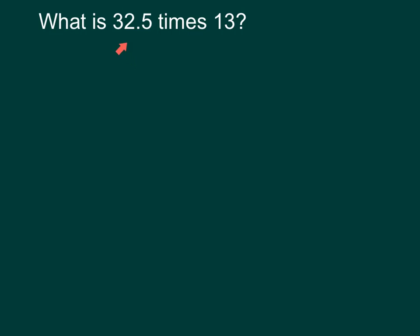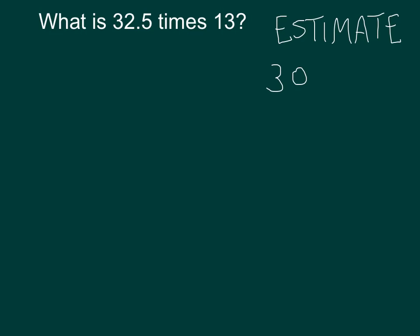For this problem, we want to take this number, 32.5, times 13. I'm going to show you one way to do this. The first thing we're going to do is an estimate. When we do our estimate, I look at my two numbers and I say, what is this close to and what is this close to? I'm going to round to the nearest 10. I have 32.5, which is close to 30, times 13, which is close to 10. That is equal to 300. That's my estimate.